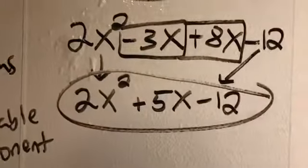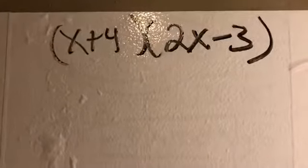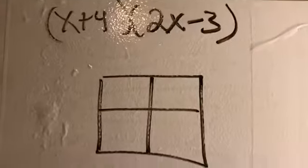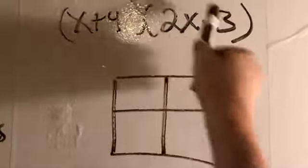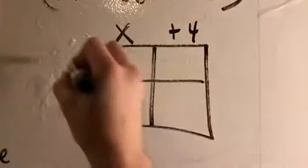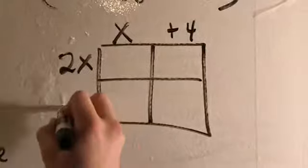There we have our final answer. Another way to organize that multiplication—so this is the same problem as last time—is using a nice area model. I can draw a nice little box like this. Now I'm going to label each side with one of my parentheses: here's x and positive 4, and here's 2x and minus 3.